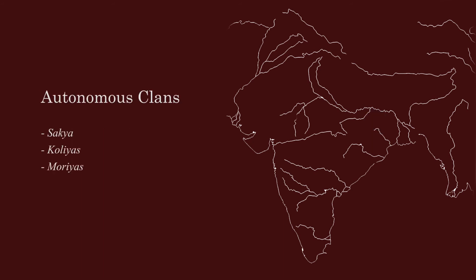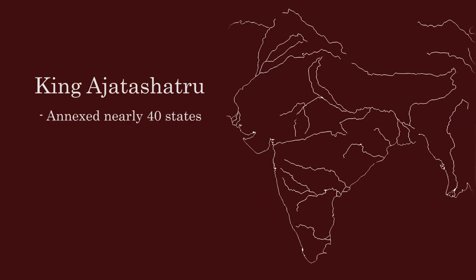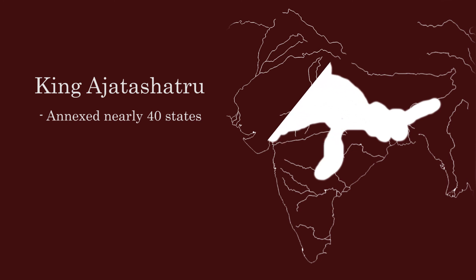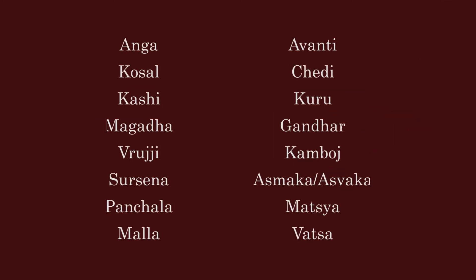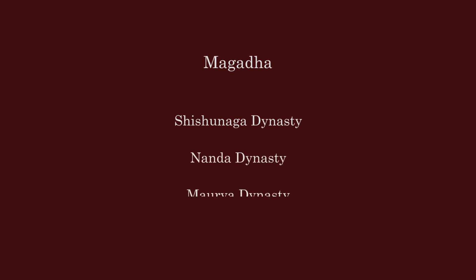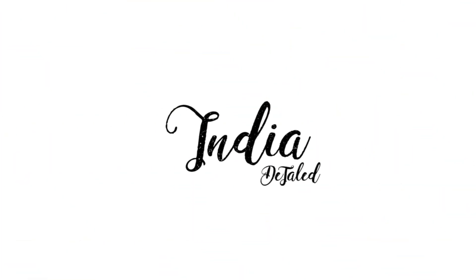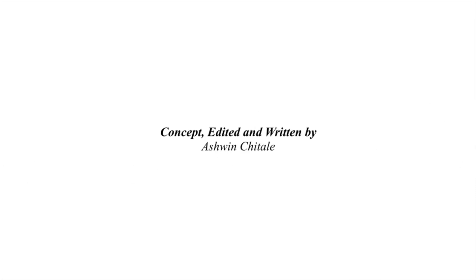With these 16 states, there were many other small autonomous clans too. King Bimbisar is considered to be the first ruler of Magad — he founded the Narnika dynasty, invaded the state of Anga, and annexed it to expand Magad's territory. He was a contemporary of Mahavir and Buddha and was later probably killed by his own son, Ajatashatru. Ajatashatru also expanded his territory and annexed nearly 40 republic states and autonomous kingdoms. Eventually, out of the 16 Mahajanapadas, only two remained. Afterwards, the Shishunaga dynasty started ruling Magad but was overthrown by the Nanda dynasty, which was overthrown by the Maurya dynasty, which was overthrown by the Shunga dynasty, and so on. That was all about the Mahajanapadas and India post the Vedic era. Hope you liked this episode.